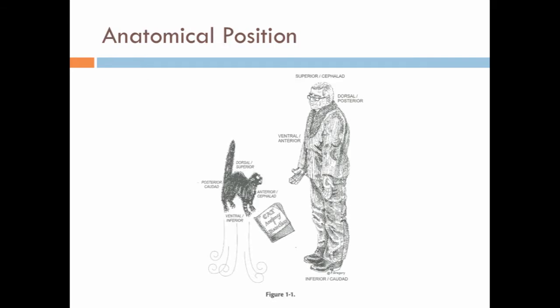Before we get started, let's talk about anatomical position because it is slightly different between humans and cats. As you can see in this figure, dorsal and ventral on the cat are not the same as they are on humans. This is because a cat walks on four legs and a human on two. So the dorsum of a cat is superior while the dorsum on a human is posterior. Just be aware of the difference in directions as we look at images of the cat.